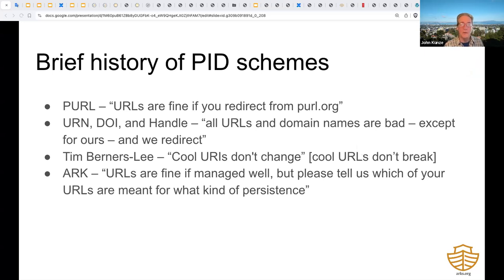Here's a short history of PID schemes. The PURL scheme fully embraced the URL—just use URLs that we redirect for you. Meanwhile, URNs, DOIs, and handles got confused for a while, initially saying that all URLs are banned, until they later reversed that position and fully embraced the URL. The inventor of the web said basically: just use URLs and manage them carefully. The ARK approach agreed and said go ahead, use URLs, but embed a recognizable label to suggest that this URL is meant to be persistent and include a globally unique identity that doesn't depend on the domain name and on today's web protocols.